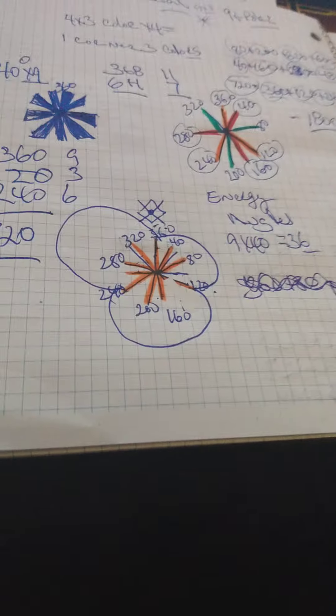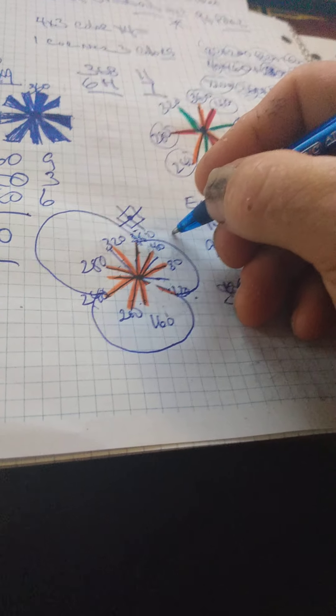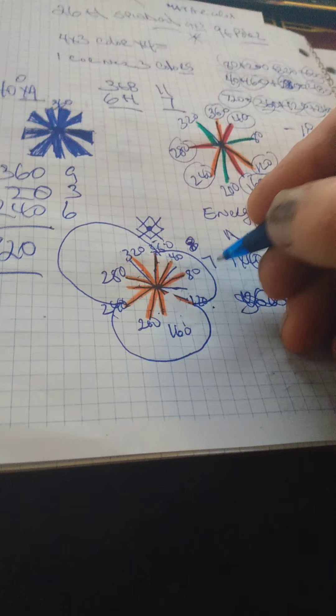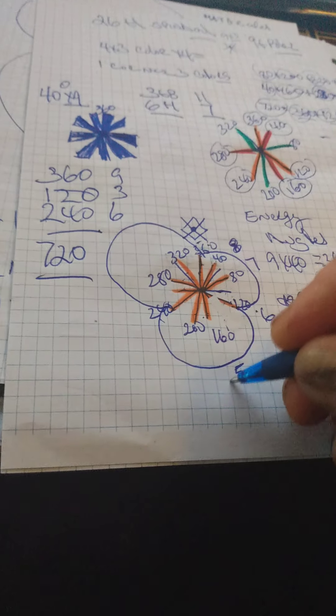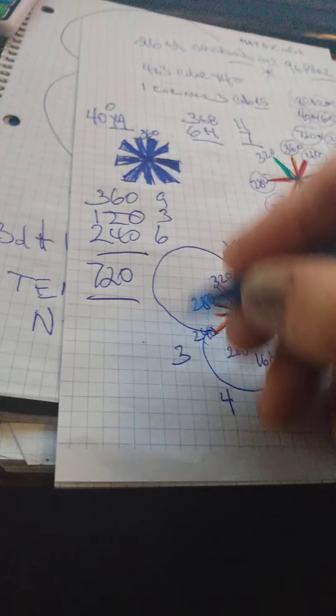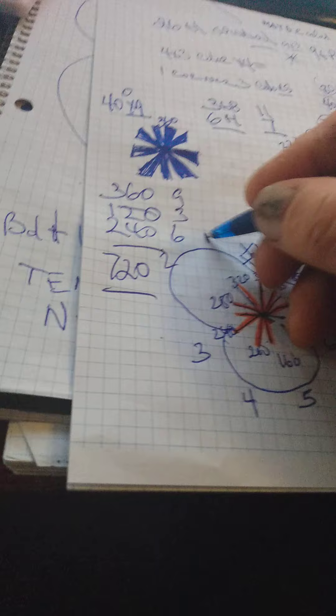So we're going to go 9, 8, 7. So if this is number 8 over here, this is number 7, this is number 6, this is number 5, this is number 4, this is number 3, this is number 2, this is number 1.